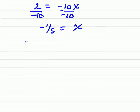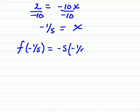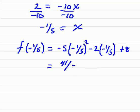And so now, we're going to find f of negative 1 fifth. So we have negative 5 times negative 1 fifth squared minus 2 times negative 1 fifth, and then plus 8. And we work our way through all of this, either by hand or using a calculator. And I've already got it worked out, so I'm just going to write this 41 over 5, which is approximately 8.2.